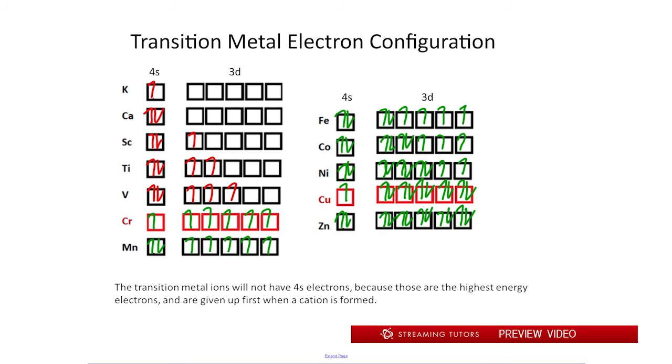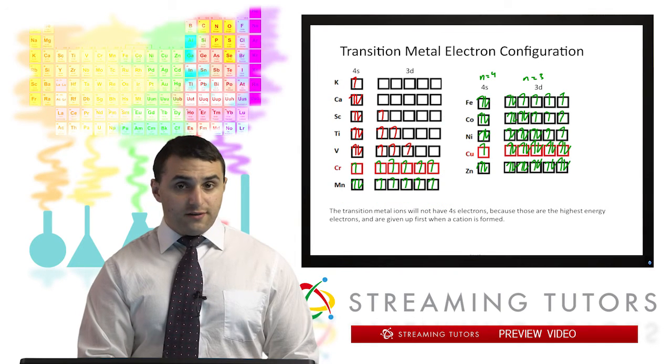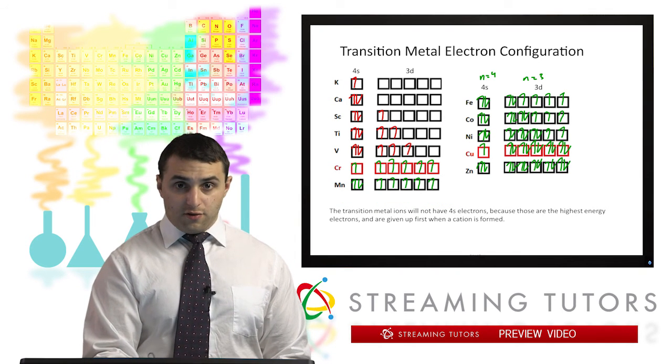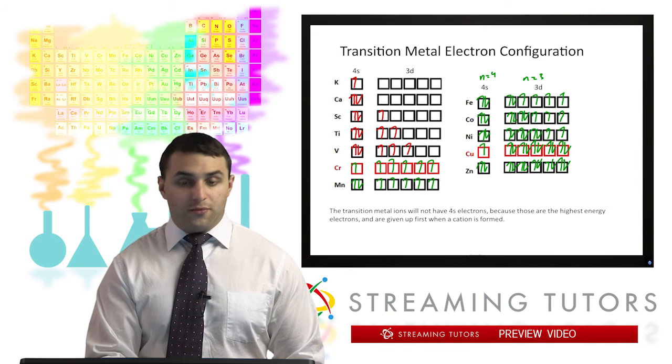Okay so those are just for the neutral compounds. What we'll notice is that the transition metal ions are going to usually not have any 4s electrons. The reason being that the 4s electrons have a higher n number. This is n equals 4 as opposed to n equals 3. And so when we take away electrons to form a cation, we're going to take them away from the 4s orbital first.